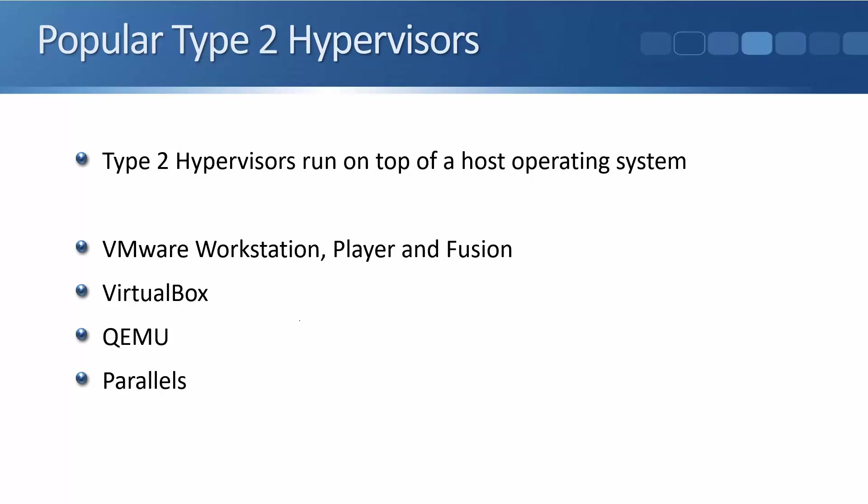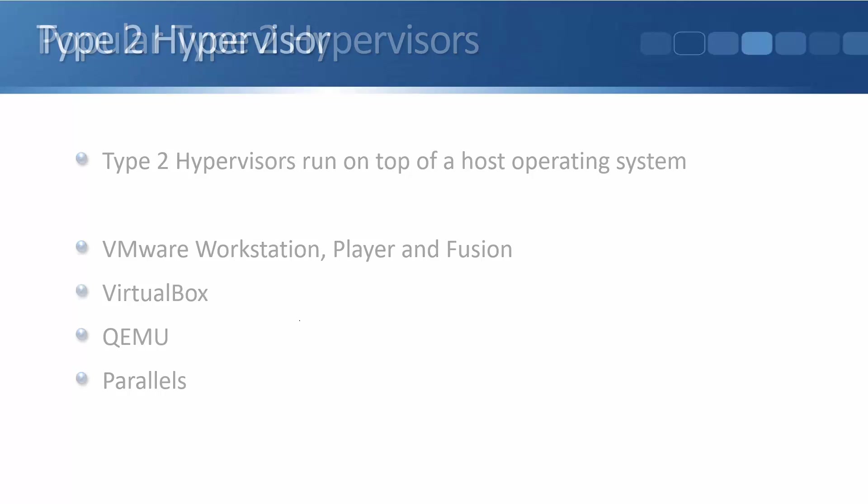We also have Type 2 hypervisors. A Type 2 hypervisor runs on top of a host operating system. Popular Type 2 hypervisors include VMware Workstation, VMware Player, and VMware Fusion for the Mac. VirtualBox, QEMU, and Parallels are also Type 2 options. Type 1 hypervisors are used in the data center, and Type 2 hypervisors are used on an individual PC — I'll explain why in a moment.